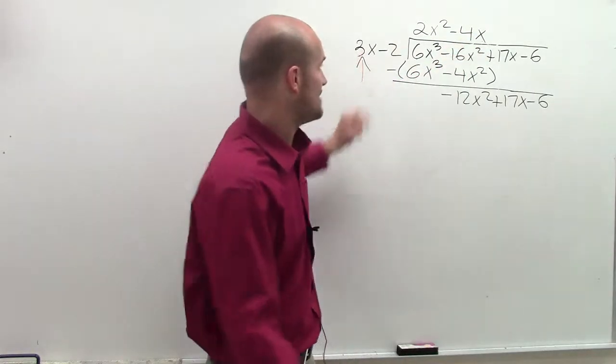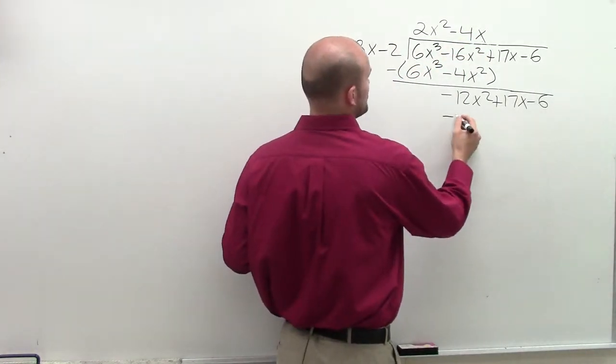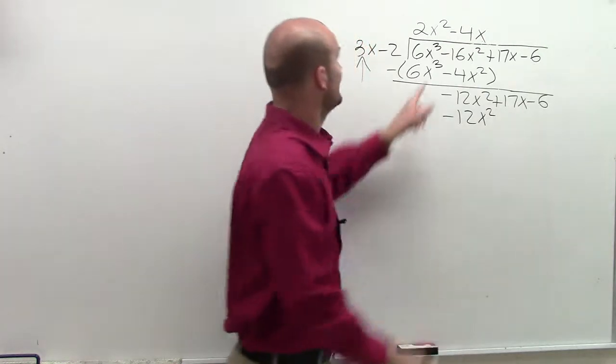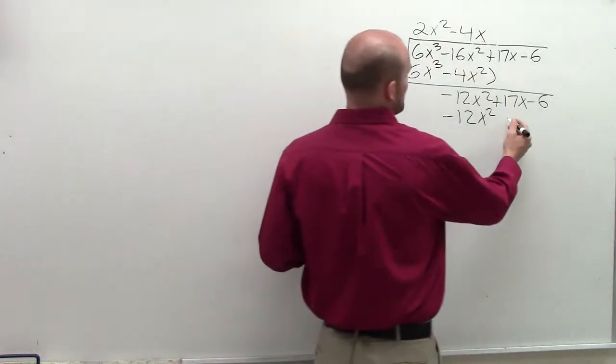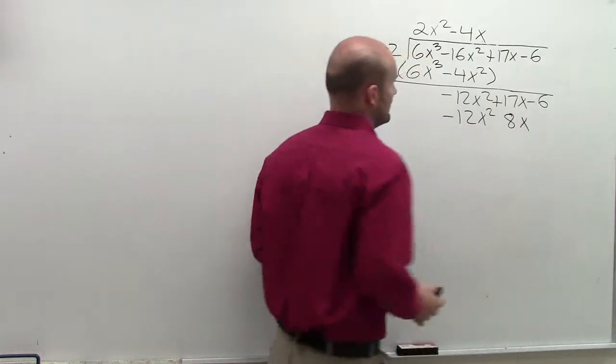Negative 4x times 3x is going to be negative 12x squared. Negative 4x times negative 2 becomes positive 8x.